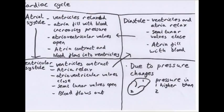The cardiac cycle is the cycle of blood being pumped around the body. There are three sections: atrial systole, ventricular systole, and diastole. Systole means contracting; diastole is rest. During atrial systole, the ventricles are relaxed and the atria fill with blood, decreasing their volume. Decreasing the volume with the same amount of blood increases the pressure, causing the atrioventricular valves to open and blood to flow into the ventricles.